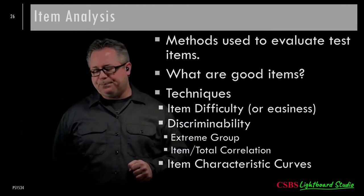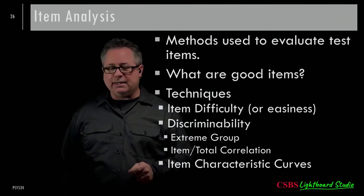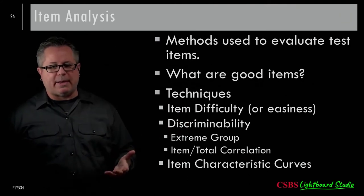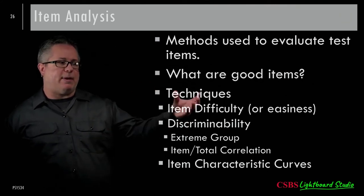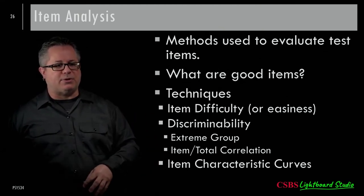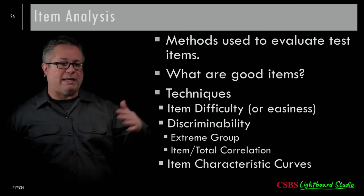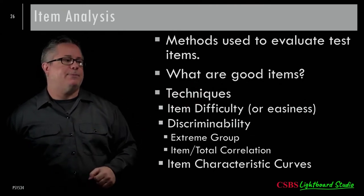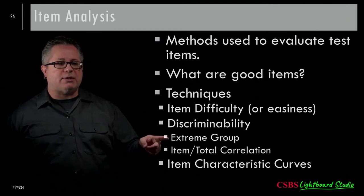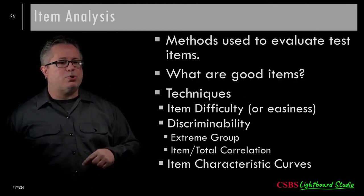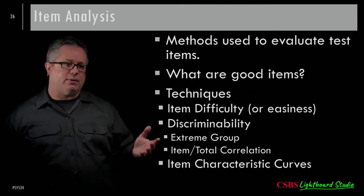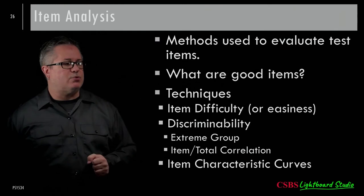The extreme group method makes a lot of sense: if you want a highly discriminating item, it should separate people who are high on an ability from those who are low. People really high in math ability should get the question correct; people really low should not. You create extreme groups based on total test score and look at what proportion in each group gets the answer correct.